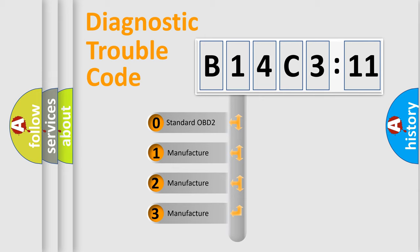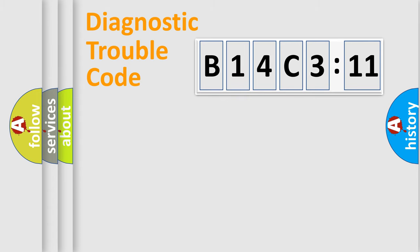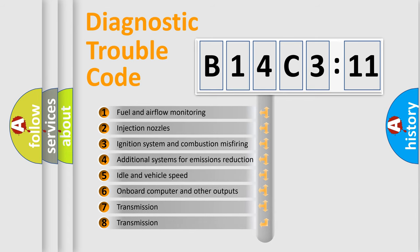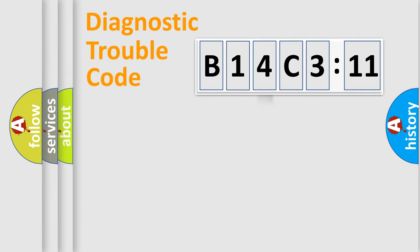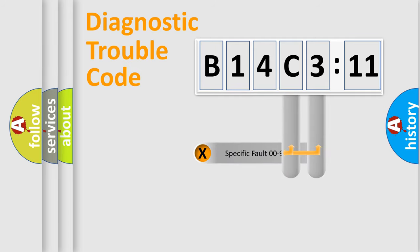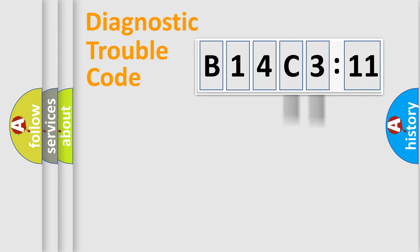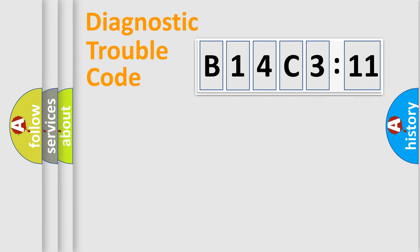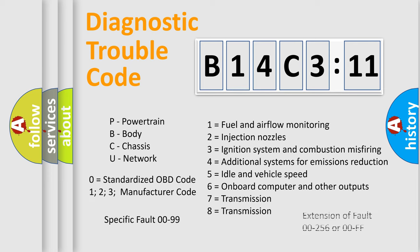If the second character is expressed as zero, it is a standardized error. In the case of numbers 1, 2, or 3, it is a more specific expression of a car-specific error. The third character specifies a subset of errors — this distribution is valid only for the standardized DTC code. Only the last two characters define the specific fault of the group. The add-on to the error code serves to specify the status in more detail, for example, a short to ground. Note that such a division is valid only if the second character is expressed by zero.